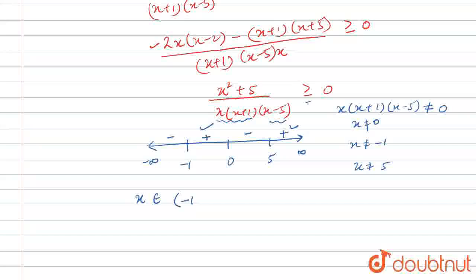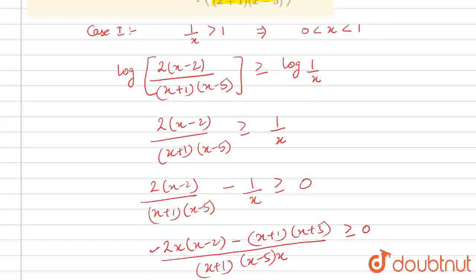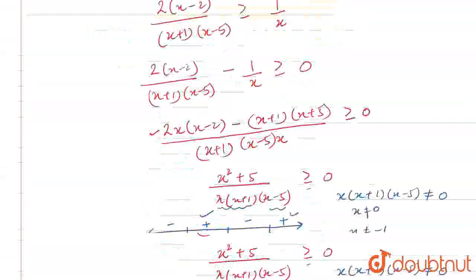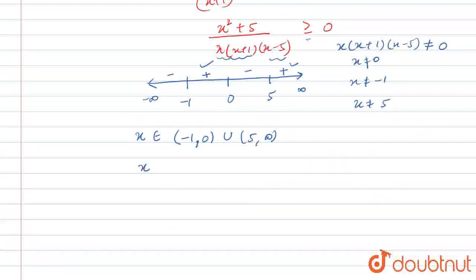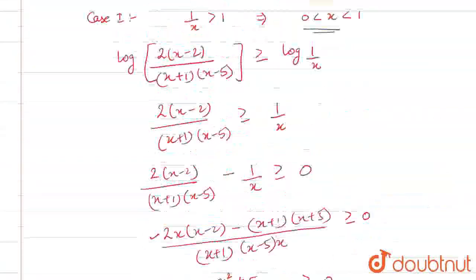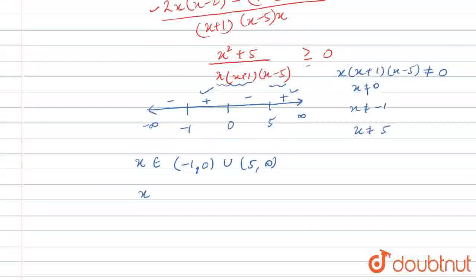It means that minus 1 is not included. So the solution is (minus 1, 0) union (5, infinity). But in this case we considered that x is belonging to (0, 1). When we correlate both conditions, since (0,1) is not a subset of this solution, we will get the null set — no solution. We get phi in this case, meaning no solution.